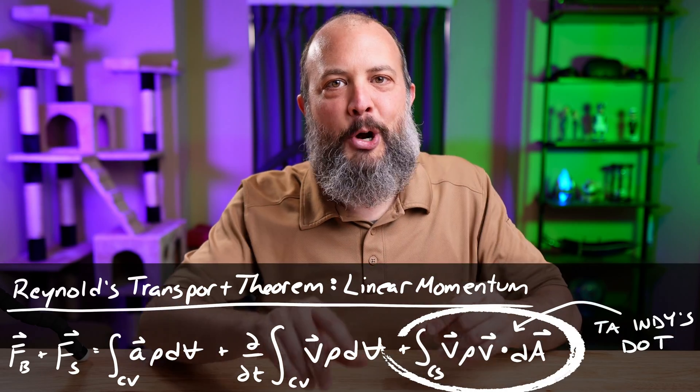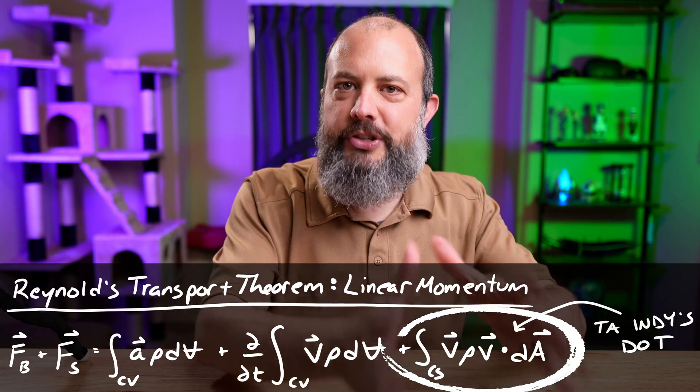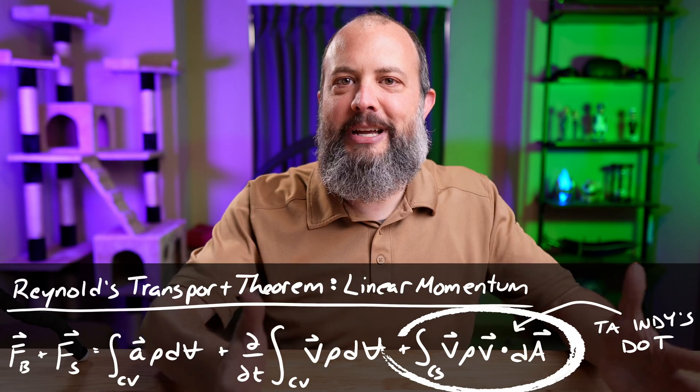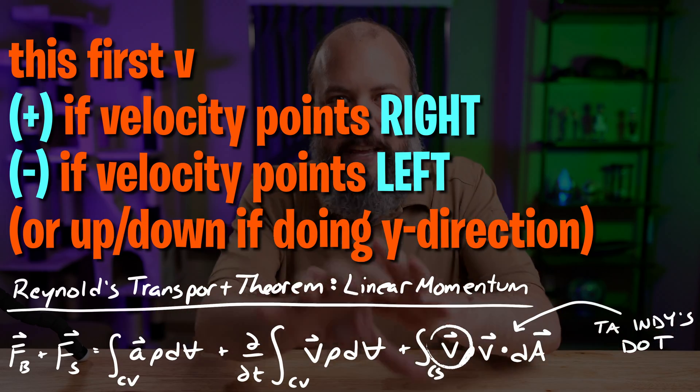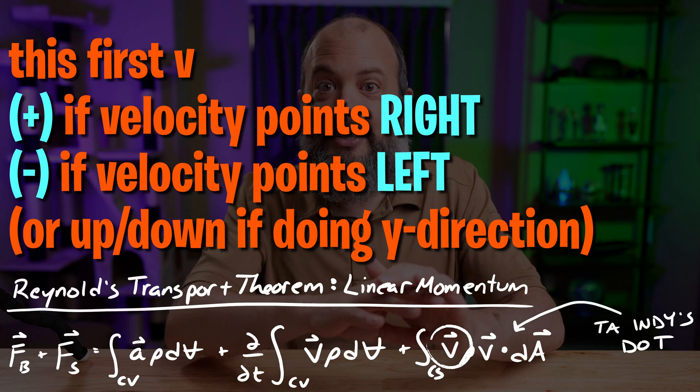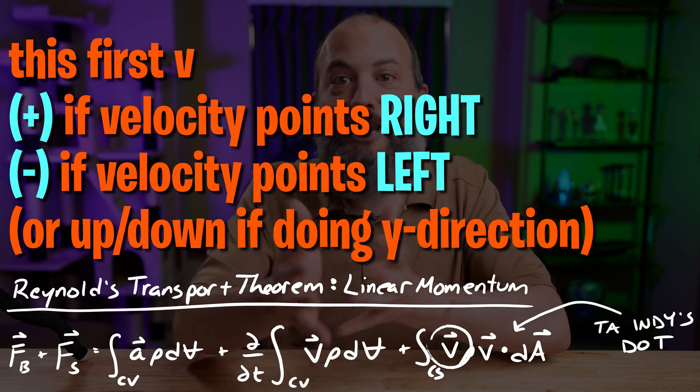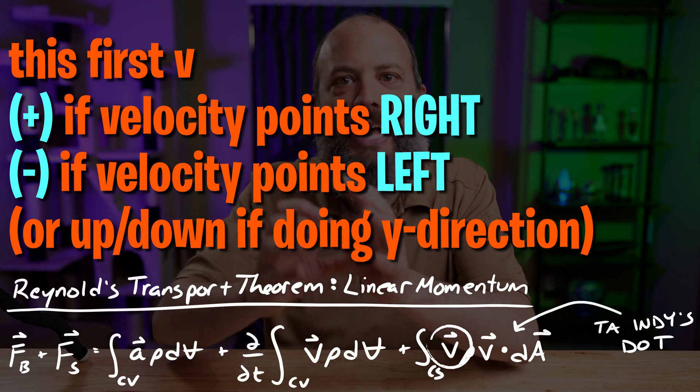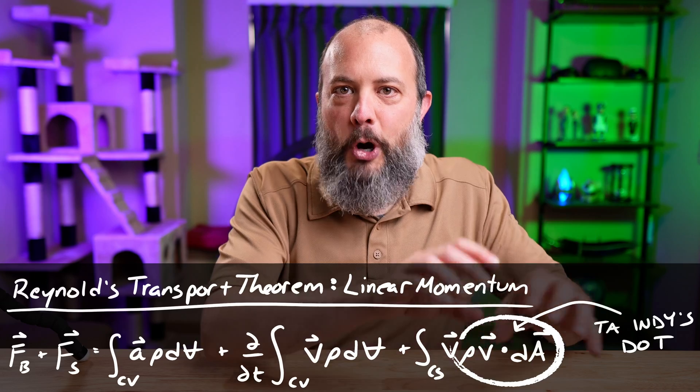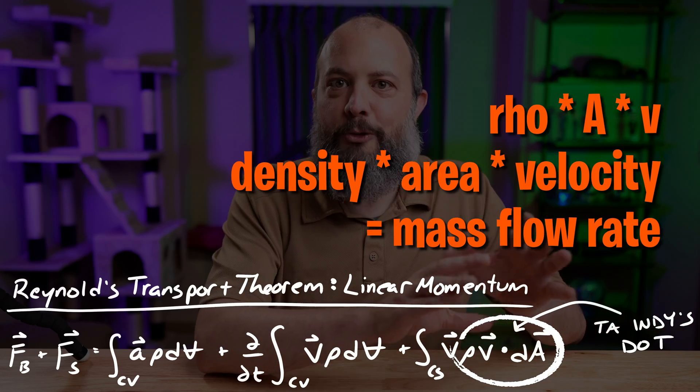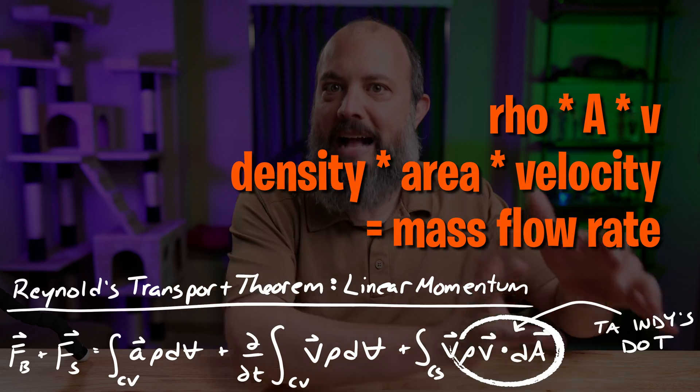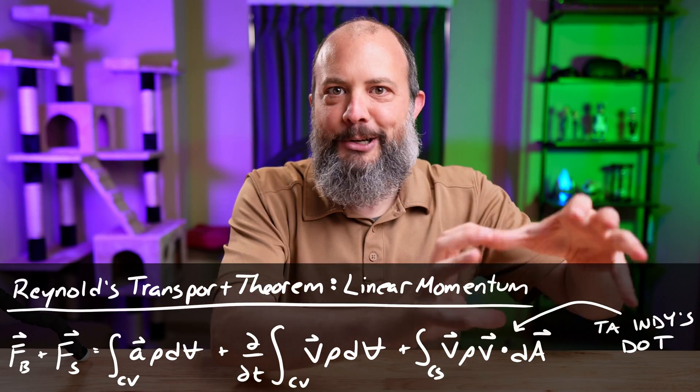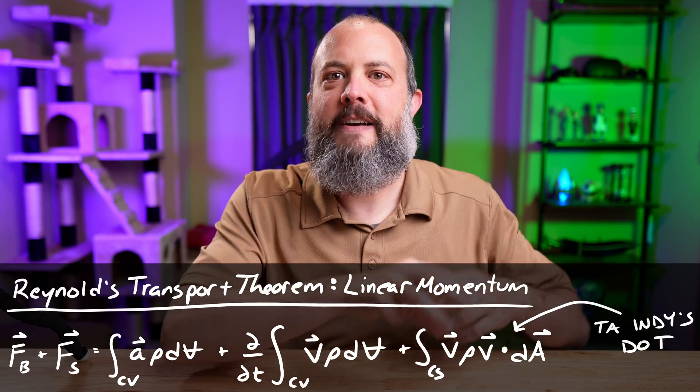Last integral, bounds of integration are CS for control surface. This is all of your fluid entering or exiting across a surface. So the first V in this expression can be thought of as the velocity with like an X or Y component, depending on which direction velocity is pointing. And then last terms, rho v dA, right? That's like rho A V, density times area times velocity. That's mass flow rate. So this whole last integral is just m dot V.